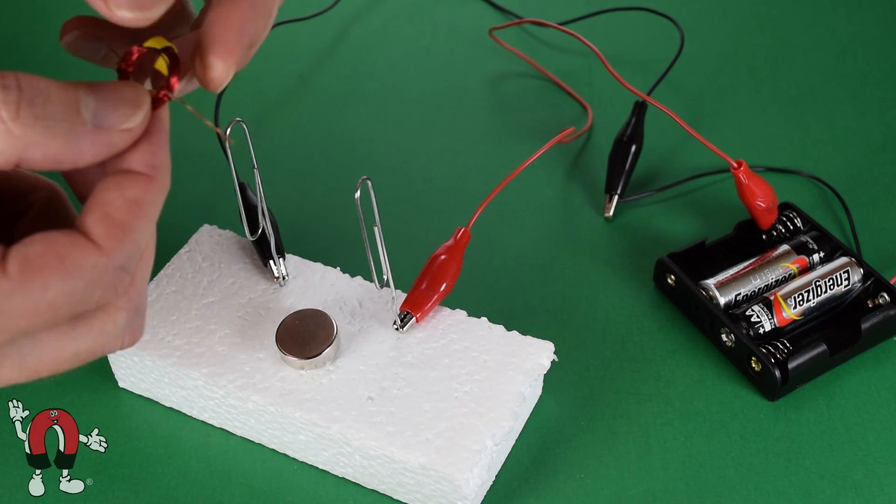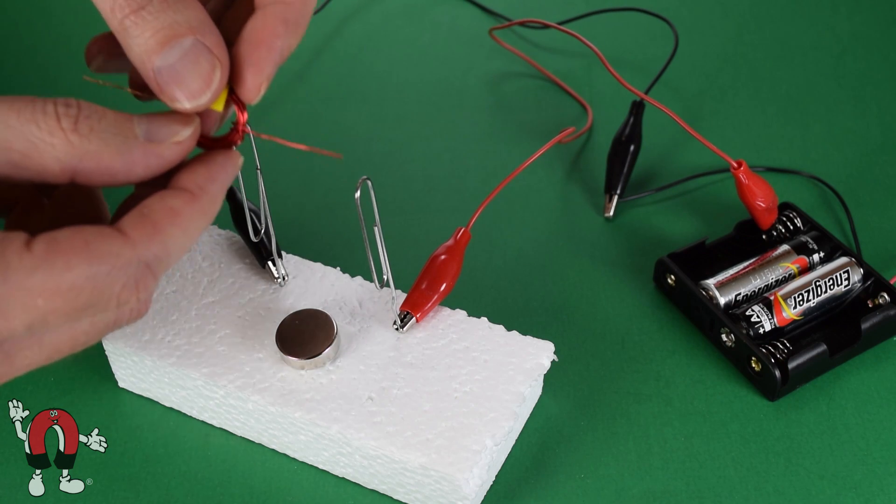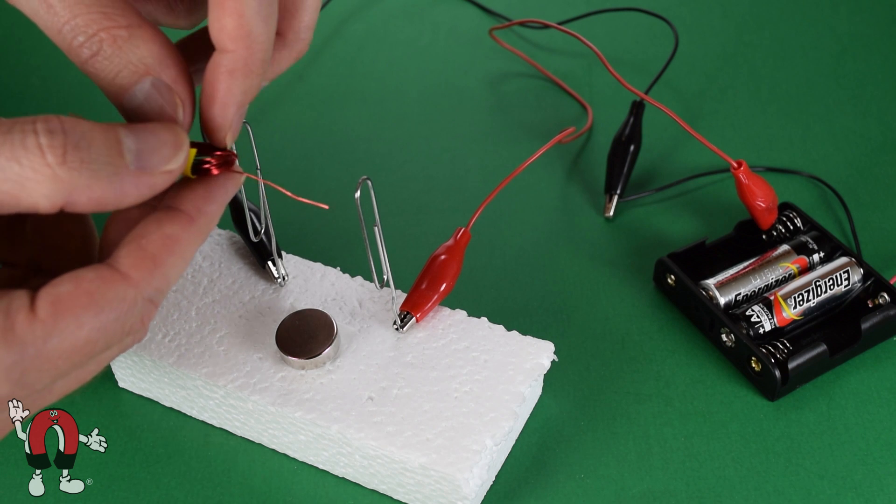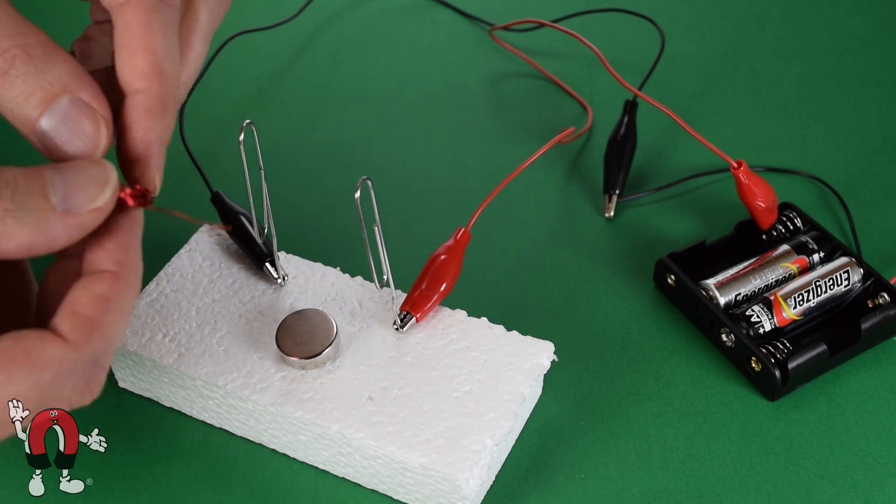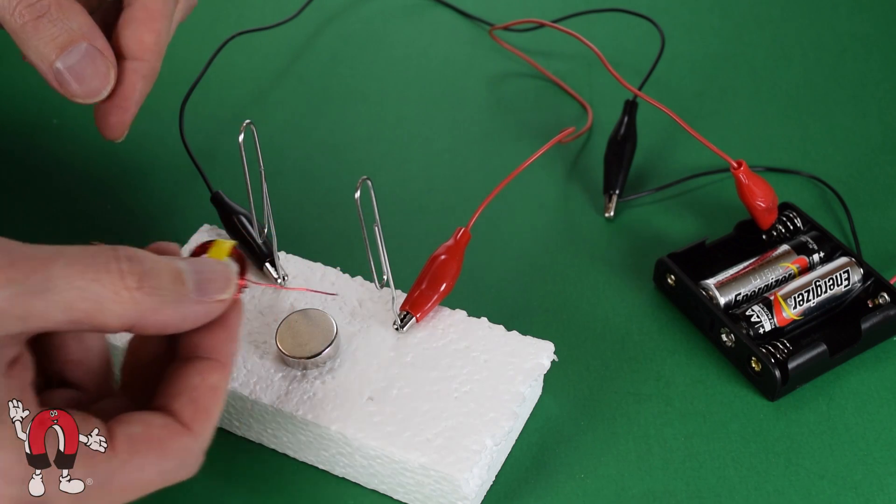One side has all the insulation scraped off. The other side has it not scraped off on part of it, but it is scraped off on part of it. So as it spins around, it makes contact and then breaks contact with these paper clips.